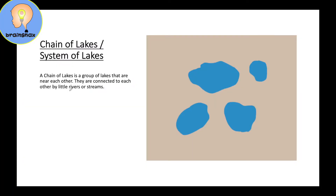And here we have a chain of lakes, more commonly just called chain of lakes. A chain of lakes is a group of many lakes together that are near each other. They are connected to each other by little rivers or streams — they will share water with each other. These are chains of lakes.